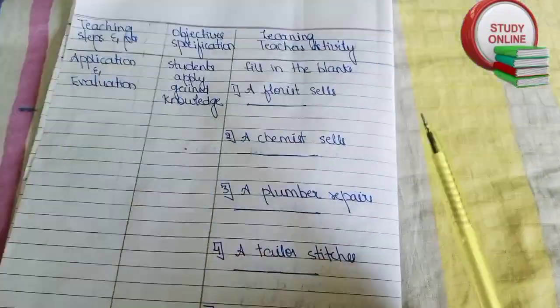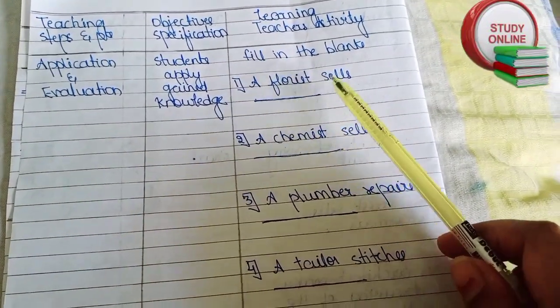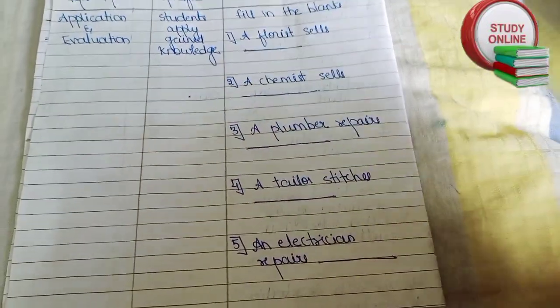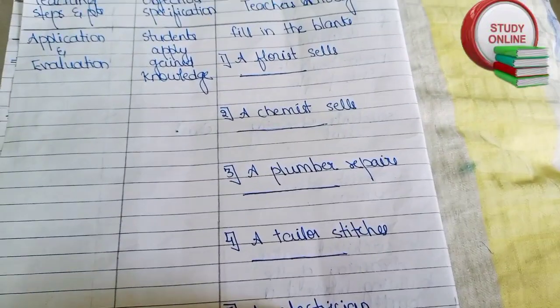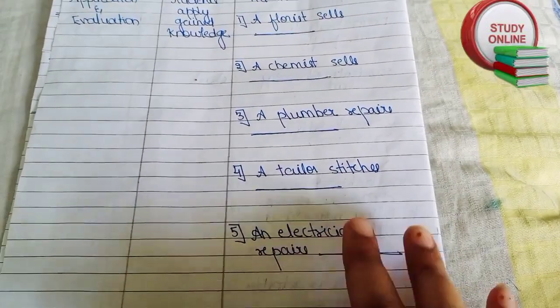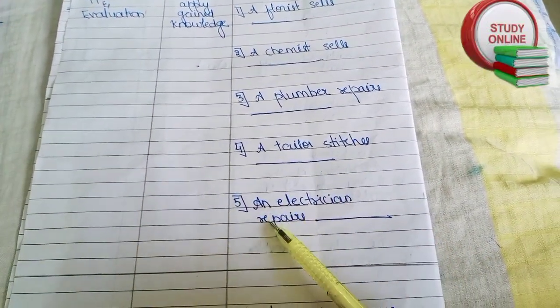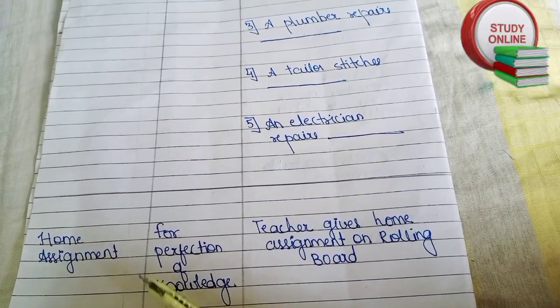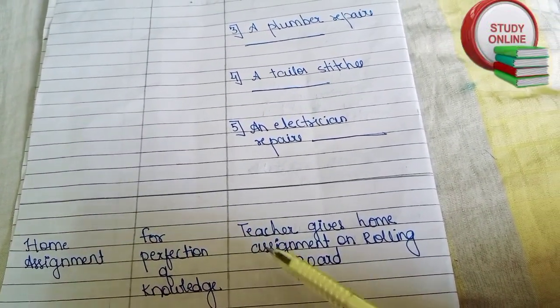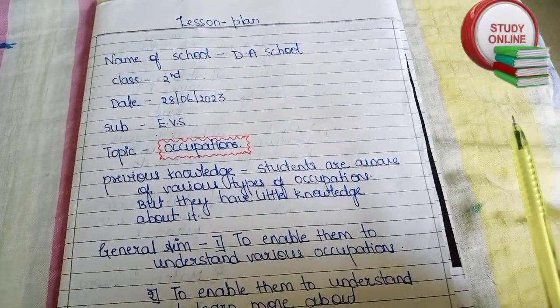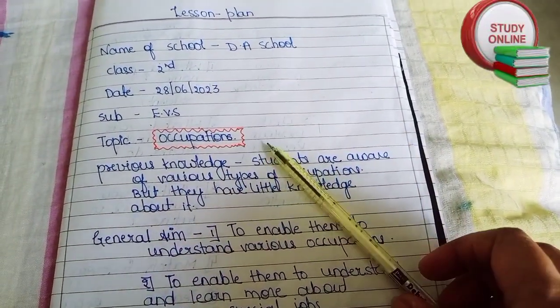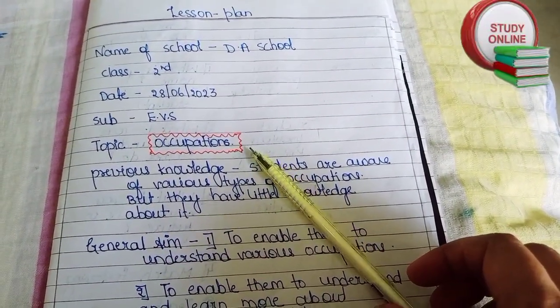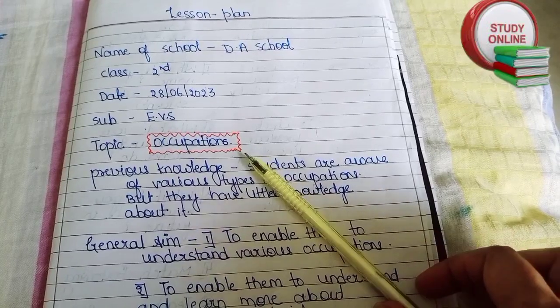This is our last page — application and evaluation. For that, we can give five questions to students. Here I have given fill-in-the-blanks, and five questions is enough — do not add more than that. For home assignment, the teacher has to give a home assignment. This was my lesson plan on the topic occupations.